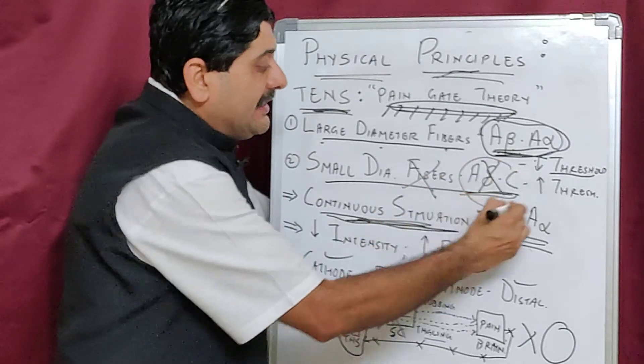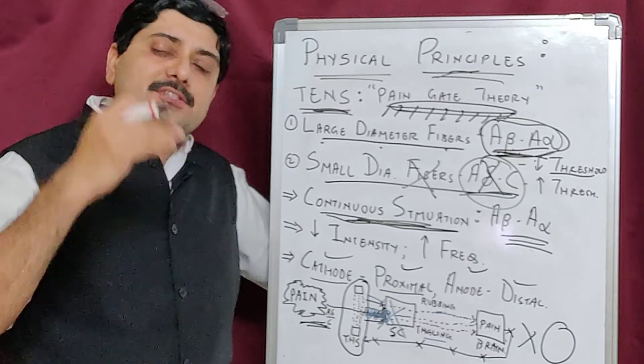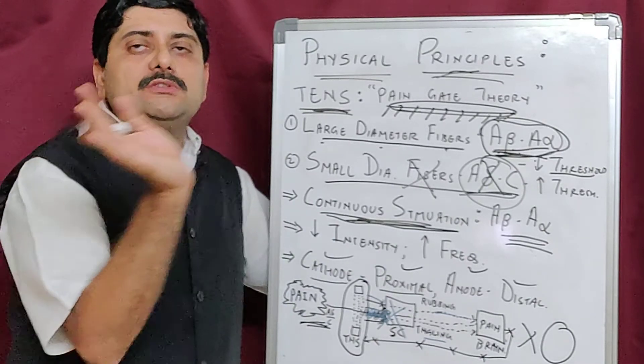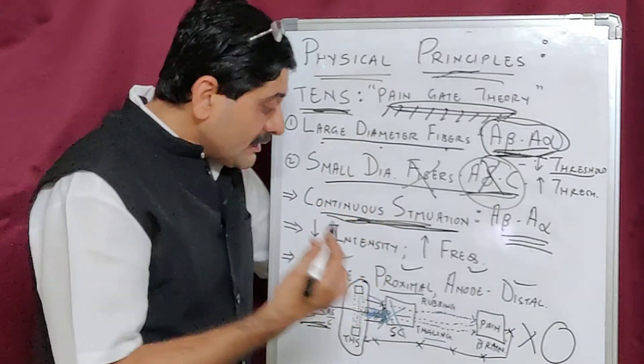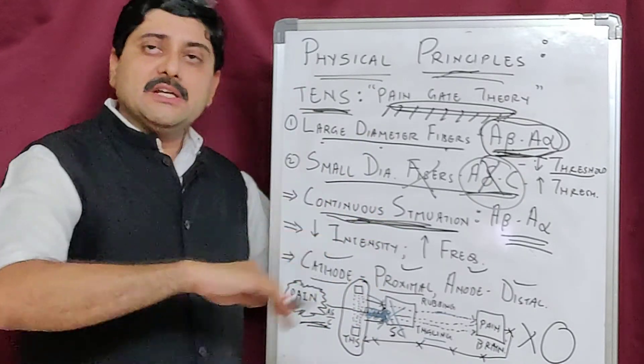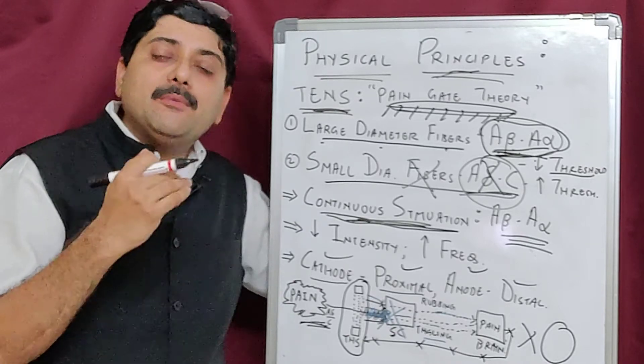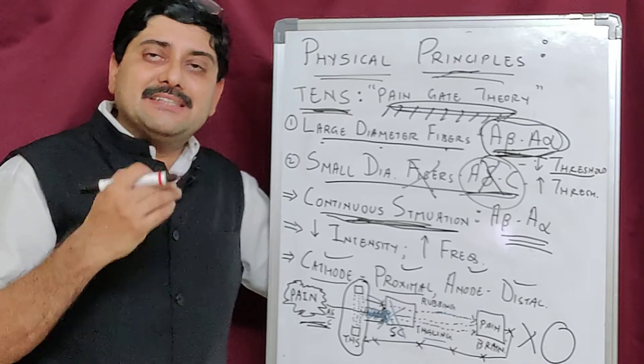Thereby stopping the conveyance of pain from the spinal cord and closing the door. Once this door is closed, the spinal cord can no more identify the A-delta and C fiber related nociceptors or pain sensations.